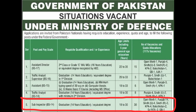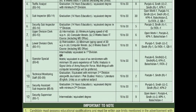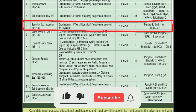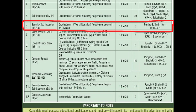Sub-Inspector vacancies: open merit की 1, Punjab की 14, Sindh Urban की 4, Sindh Rural की 2, KPK की 4, Balochistan की 2, X-FATA की 2, GB की 1। Security Sub-Inspector — graduation, 14 years education, equivalent degree in first division। Age limit: 18 to 30 years। 5 vacancies: Punjab की 3, Sindh Rural की 1, X-FATA की 1।